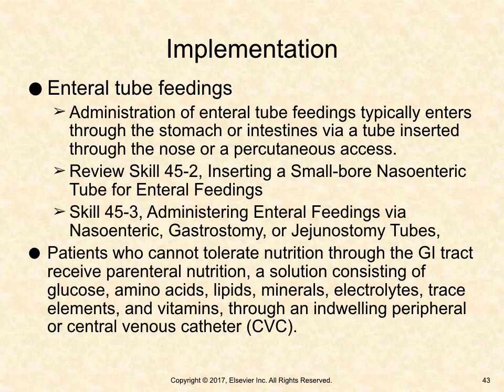Administration of enteral tube feedings typically enters through the stomach or intestines via a tube inserted through the nose or percutaneous access. Patients who cannot tolerate nutrition through the GI tract receive parenteral nutrition—a solution consisting of glucose, amino acids, lipids, minerals, electrolytes, trace elements, and vitamins—through an indwelling peripheral or central venous catheter. Review skill 45-2 on inserting a small-bore nasoenteric tube and skill 45-3 on administering enteral feedings via nasoenteric, gastrostomy, or jejunostomy tubes.